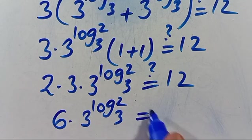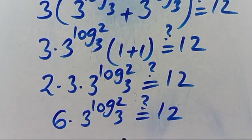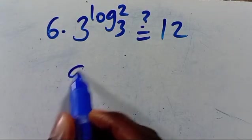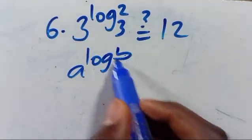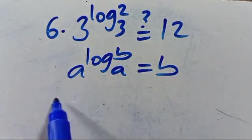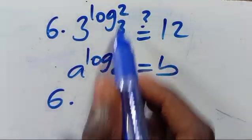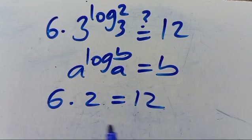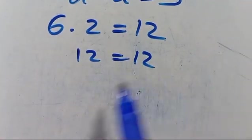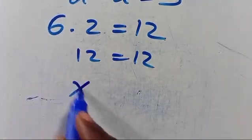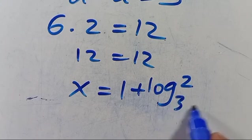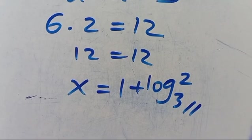Recall that when we have a to the power of log base a of B, where the base and the expression match, the output equals B. So 3 to the power of log base 3 of 2 equals 2. Therefore we get 2 times 3 times 2 equals 12. Since 12 equals 12, the left-hand side equals the right-hand side, confirming that X equals 1 plus log base 3 of 2 satisfies the problem. Bye bye.